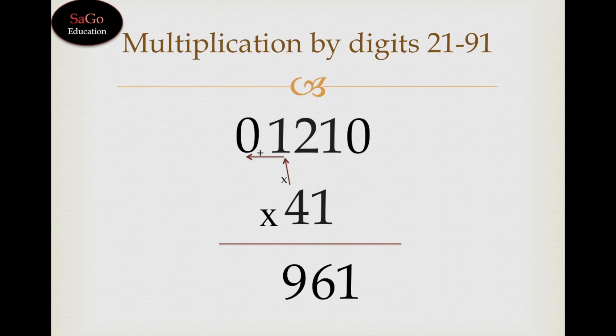4 times 1 is 4, plus 0 makes 4. Write 4. Our answer is 4961.